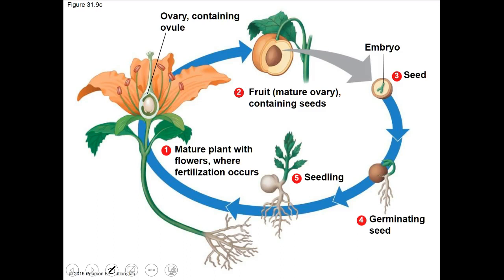We have a fruit containing the seed within it. We can start anywhere because it's a cycle. The fruit with the seed — once the seed lands, it will germinate or begin to grow, then turn into a seedling, a little baby plant, which will eventually become the mature plant. First we have the mature plant with the flower and the ovule within the ovary, which develops into the fruit and then into the seed. This is where fertilization occurs. The fruit gives us the seed with the developing embryo. The seed germinates, we get a seedling — that's our plant life cycle.